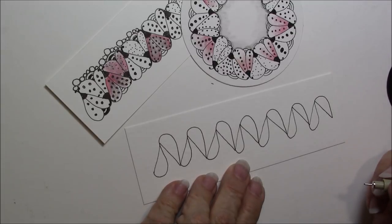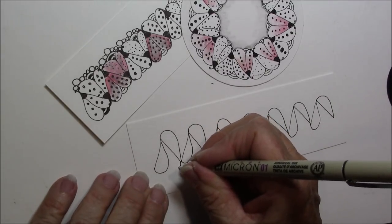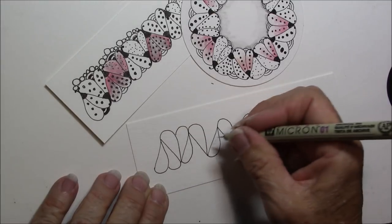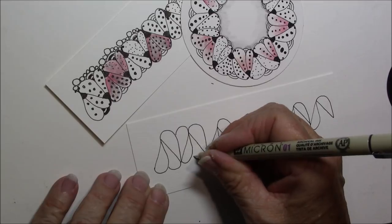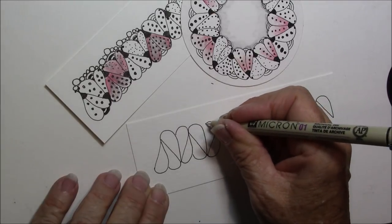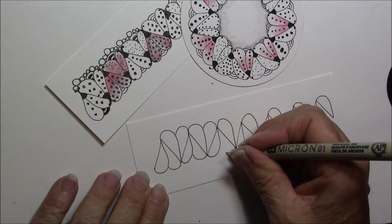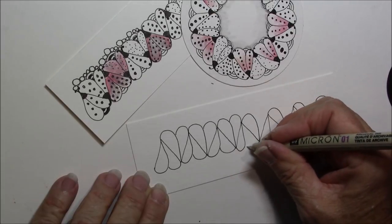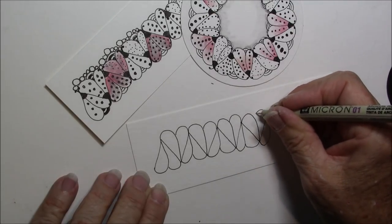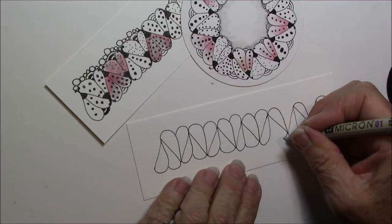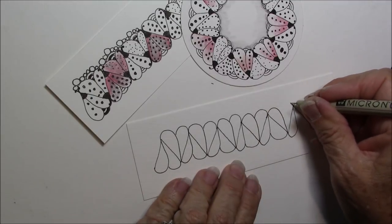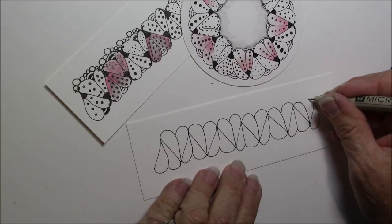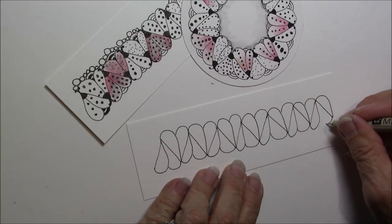And now we're going to come back and I'm going to connect it so it kind of has a little heart shape. Easy little tangle but just with Olga's little added things, what a darling little tangle.